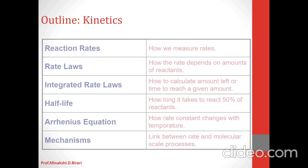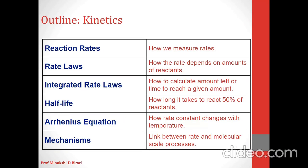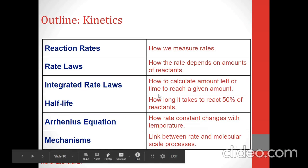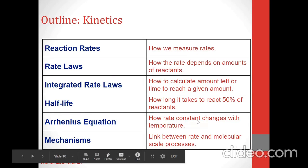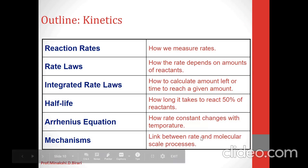In chemical kinetics, we will see these terms: reaction rates — how we measure the rates; rate laws — how the rate depends on amounts of reactants; integrated rate laws — how to calculate the amount left or time to reach a given amount; half-life — how long it takes to react 50% of reactants; Arrhenius equation — how rate constant changes with temperature; and mechanism — the link between rate and molecular scale processes. That is the outline related to kinetics.